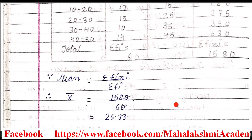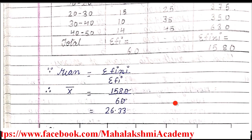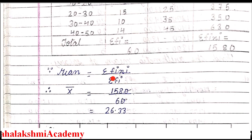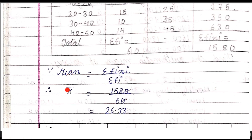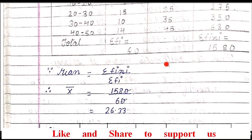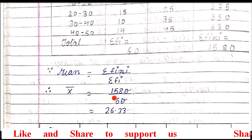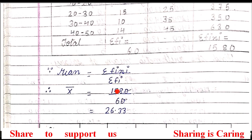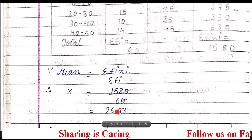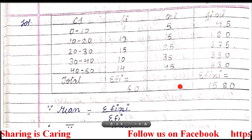The mean formula is the same as used in Exercise 17.2: mean is equal to sigma fi·xi upon sigma fi. This mean is also represented by x-bar. So mean equals sigma fi·xi which is 1580, divided by sigma fi which is 60. After simplifying, 158 divided by 6 gives us 46.33. That is the mean of this table.